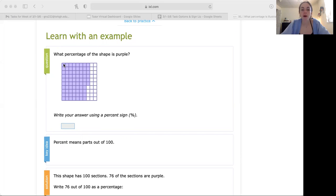Basically percent means part out of 100. So if you have purple shaded here, you want to count how much purple is shaded out of the total 100 to determine the percentage. So if this shape has 100 sections as I mentioned before, and we want to count how many sections are shaded purple, that will give us the percentage.